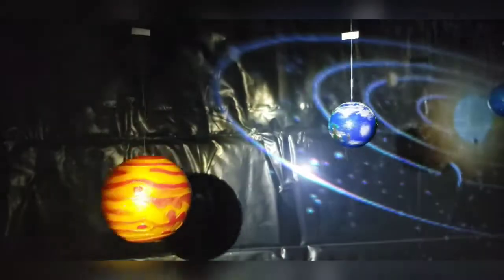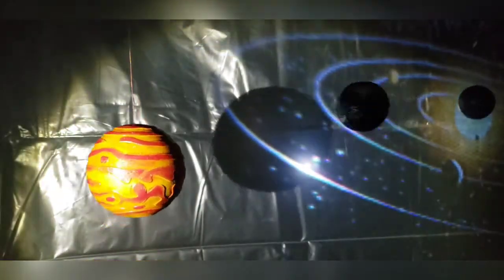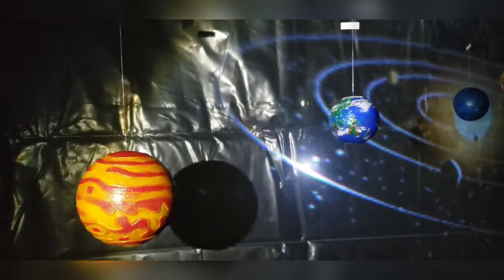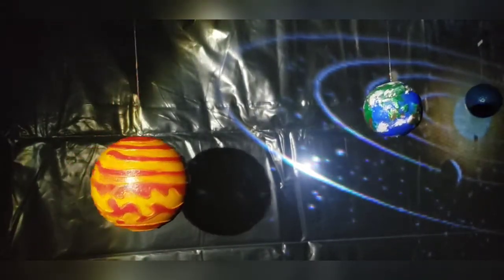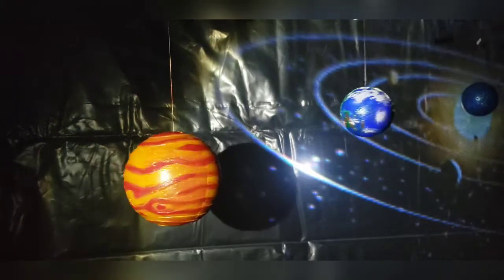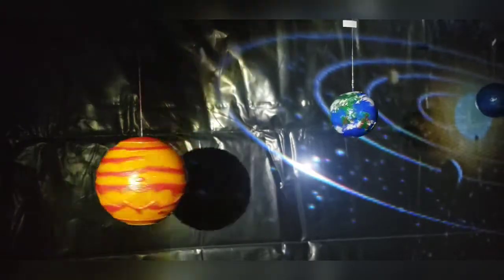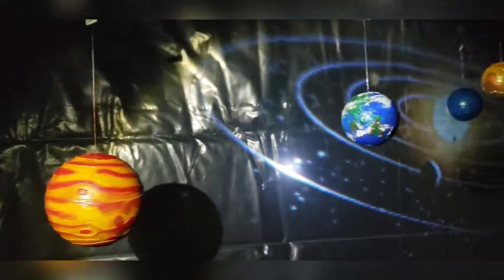Jupiter. Jupiter is peach, orange, and red. It has a big red spot. It is 142,000 kilometers in diameter.